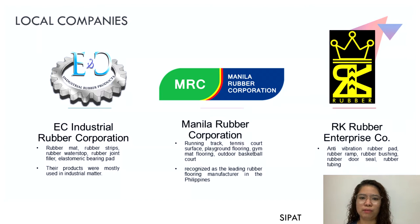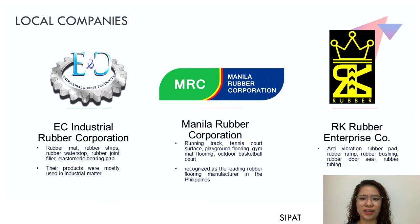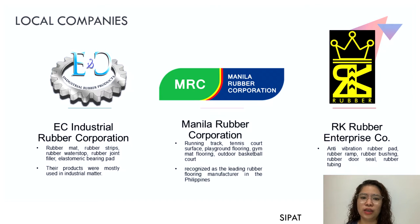Lastly among local companies, we have RK Rubber Enterprise Corporation, a reputable rubber producer in the Philippines since 1990. They supply and manufacture fine-grade rubber goods across the nation, providing a range of superior rubber products. Industrial rubber products include seals, bumpers, gaskets, shock absorbers, rubber pads, rubber ramps, rubber bushings, rubber door seals, and tubing. RK Rubber also offers food-grade rubber for applications involving consumables and other essential rubber components.